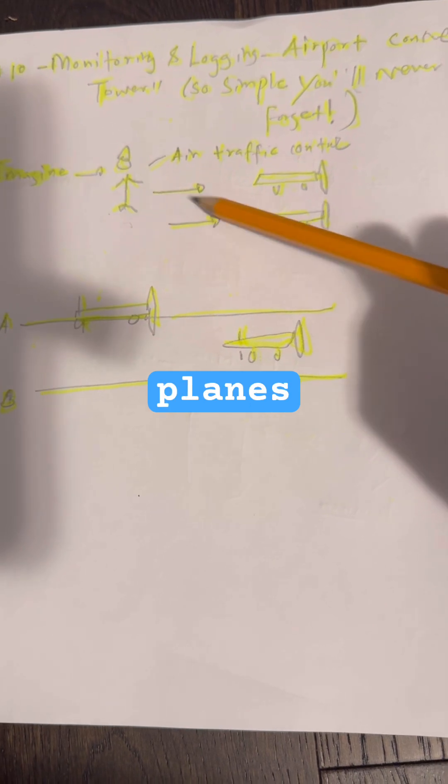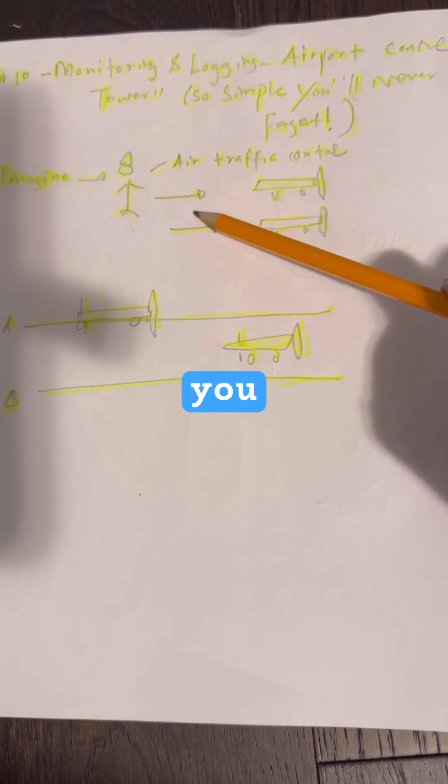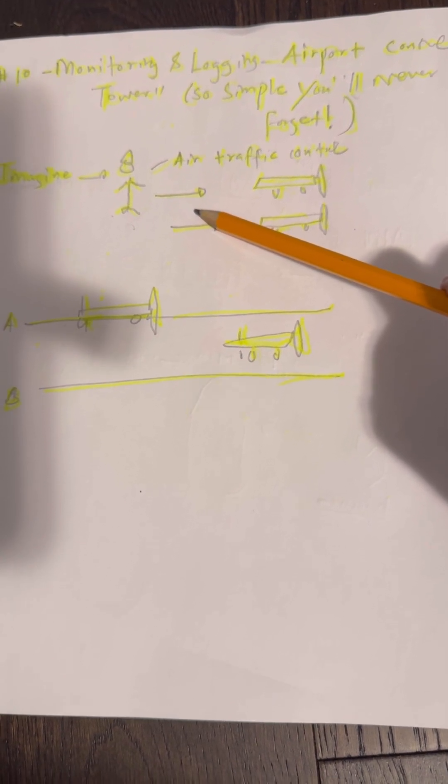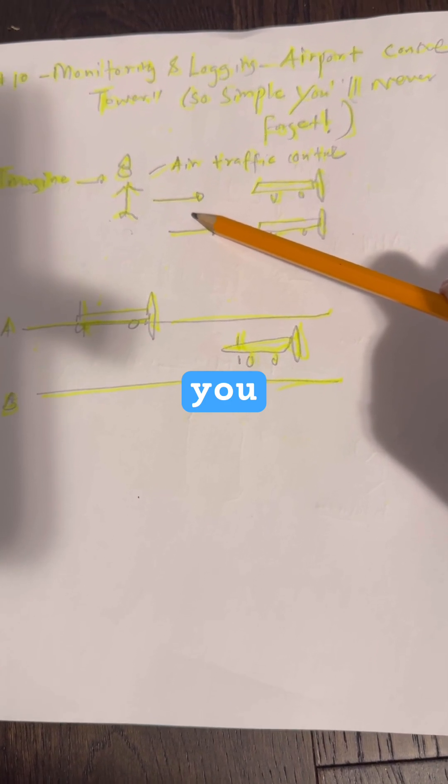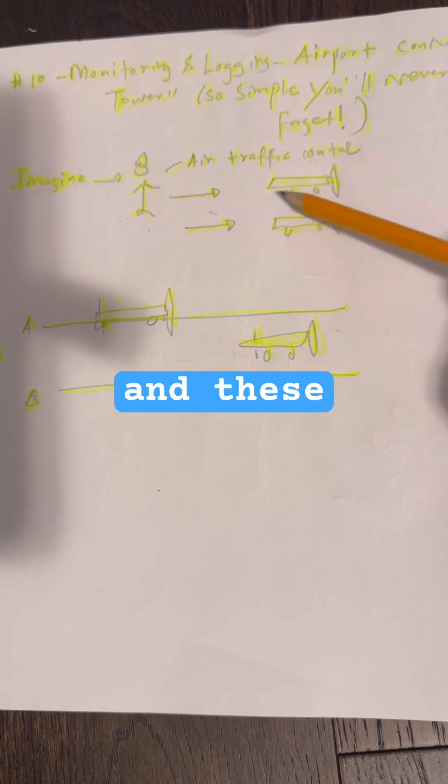You cannot fly the planes, right? But you track where every plane is, who is landing, who is delayed, and who is in trouble. You can track plane A, track plane B, and these are some planes trying to land.